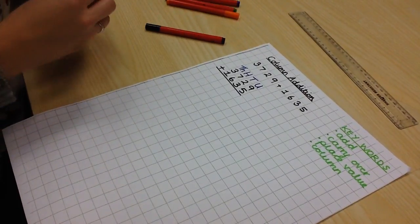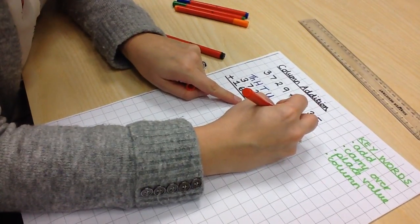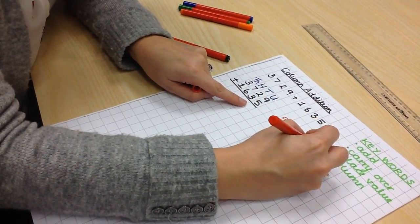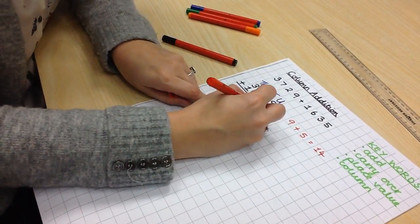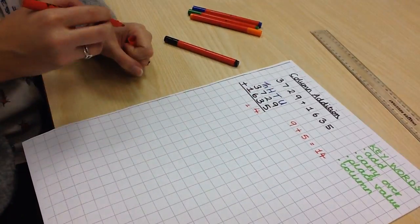Add the numbers one column at a time, starting with the units first. So, 9 plus 5 equals 14. The 4 goes into the units column and the one we carry over just underneath. We write this small.